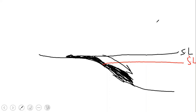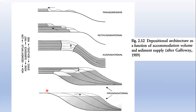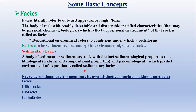This building of depositional units oceanward is termed as progradation, and it occurs as a result of regression. You can observe that with each sea level fall, facies are shifting oceanward. So this movement or shifting of depositional units oceanward is termed as progradation. With each sea level fall, shifting of depositional units is occurring oceanward.